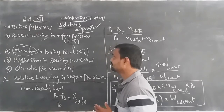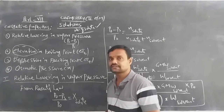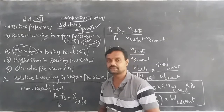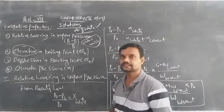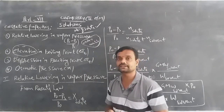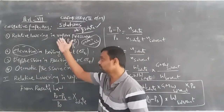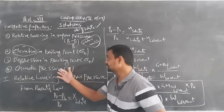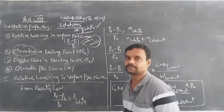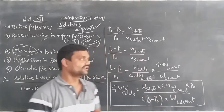The main reason we discuss colligative properties is that by using them, we can measure the molar mass of the solute in the solution. Molar mass means nothing but the molecular weight of the solute. So, these four types of colligative properties are used for determination of the molar mass of the solute. We will discuss them one by one.